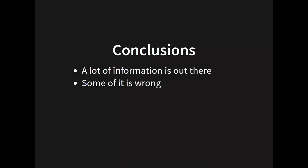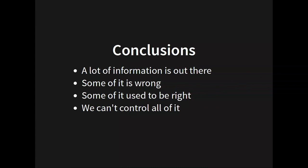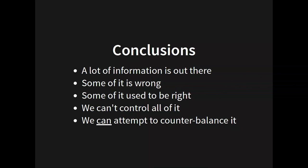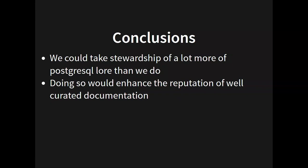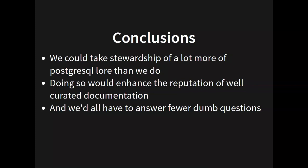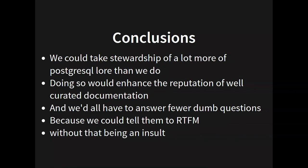Wrapping up: there's a lot of information out there. Some of it is wrong — maybe you want to fix it. Some of it used to be right and now isn't. We can't control it, but we can try to counterbalance it and overwhelm the bad information with better, more inviting information. We could be doing a lot more about this than we are. We've been busy making Postgres itself better and the docs have lagged a little bit. It would definitely enhance our reputation to improve them, and we would have fewer homework-like questions to answer. Most importantly, we could tell people to read the manual without it being an insult. Thank you.